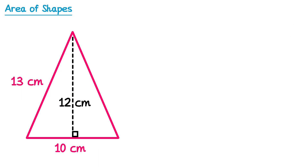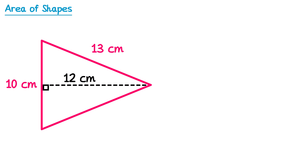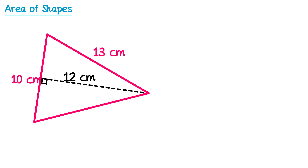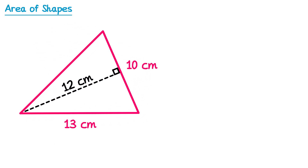Sometimes people find it difficult to identify which is the base and height of a triangle, especially because the base doesn't necessarily have to be at the bottom. If we take this triangle where we know the base is 10 and the perpendicular height is 12 and turn it around, the base is still 10 and the perpendicular height is still 12. What's important is that you find two lengths that have a right angle in between them. If this is printed on an exam question, feel free to turn the page around so you can try and find the correct base and height.